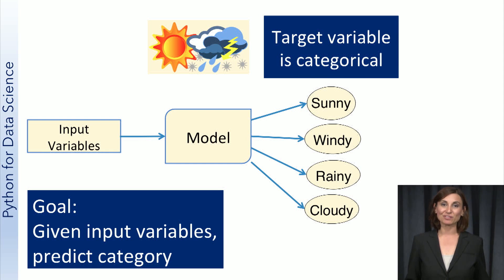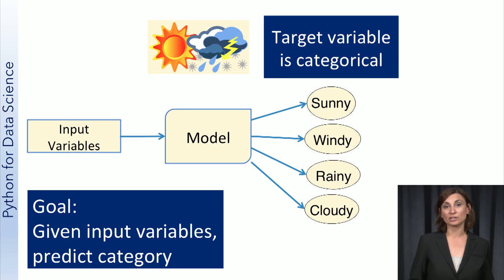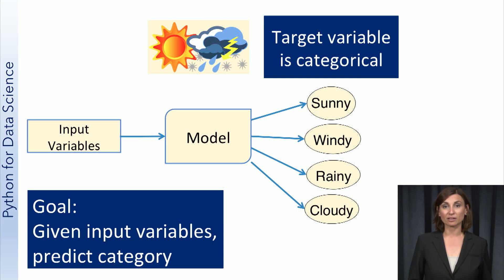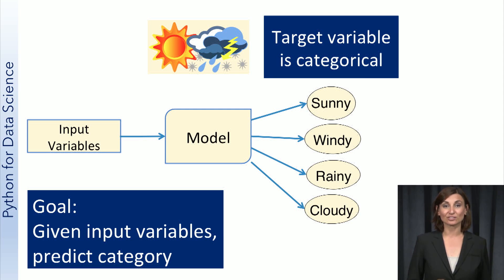Classification is one type of machine learning problem. In a classification problem, the input data is presented to the machine learning model, and the task is to predict the target corresponding to the input data. The target is a categorical variable, so the classification task is to predict the category or label of the target given the input data.